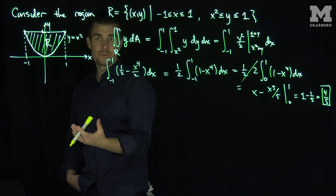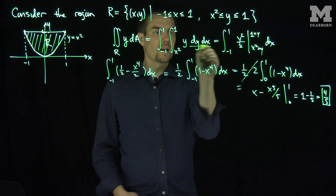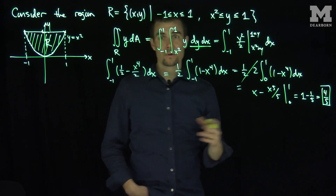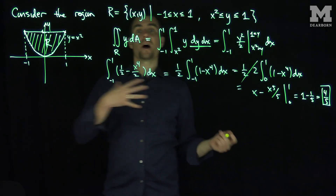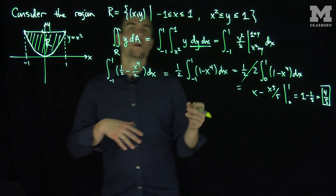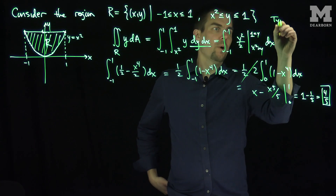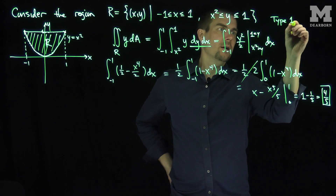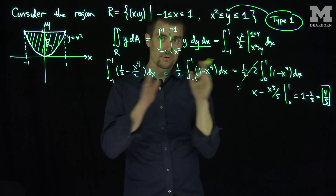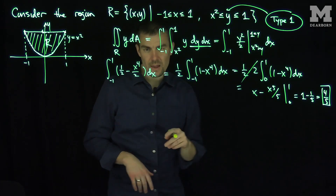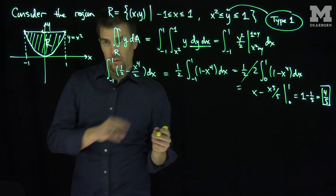Now there's an alternative way of doing this problem. Instead of doing a dy dx, according to Fubini's theorem I should be able to do a dx dy. This region written with y limits between two functions of x is frequently called a type 1 region, because for these type 1 regions y is allowed to go between two functions of x. Now I can write this region R in a different way.